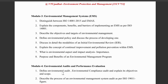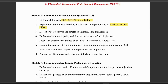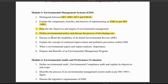Coming to Module 3, which has nearly 5 main topics with subtopics. The differences between ISO 14001:2015 and EMA is very important — out of these three, any one will definitely be asked. Next, the components, benefits, and barriers of implementing EMS as per ISO 14001 — a very important topic. Objectives and targets of environmental management is a basic one. Environmental policy and the process of developing it is a very important question. Then, modalities of initial environment review — draw a flow chart with seven to eight steps and explain each step with five points. Concept of continual improvement and pollution prevention with EMS also comes under EMS.